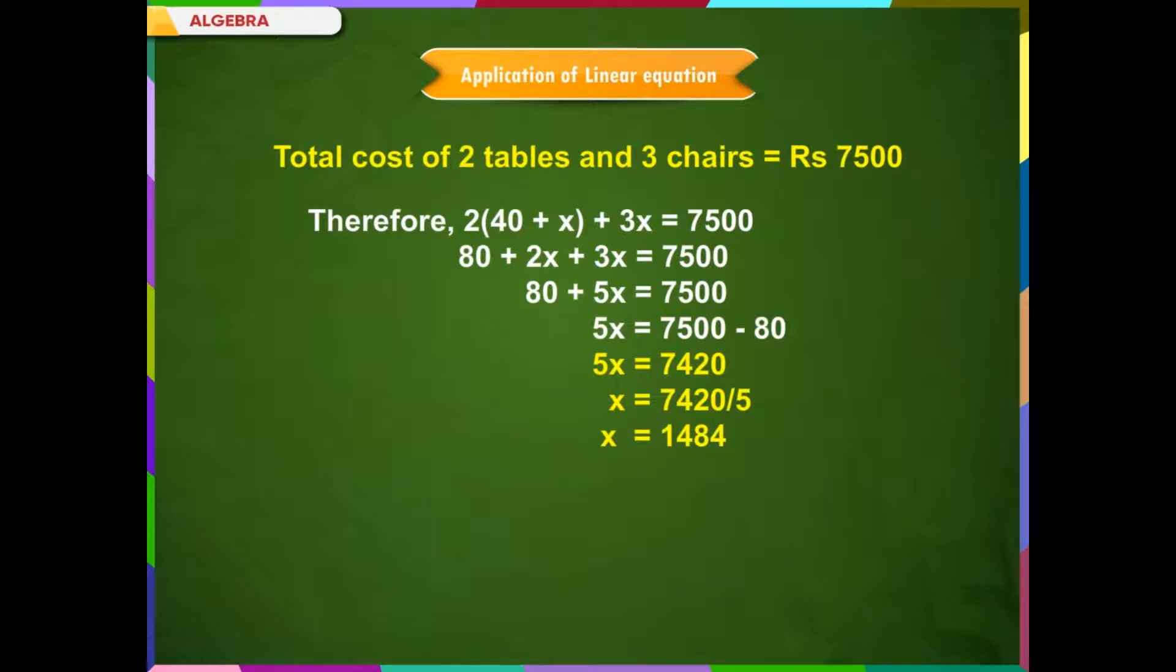5x is equal to 7,500 minus 80. 5x is equal to 7,420. x is equal to 7,420 divided by 5, which equals 1,484. The cost of the table is 40 plus x, which is 40 plus 1,484, equal to 1,524.